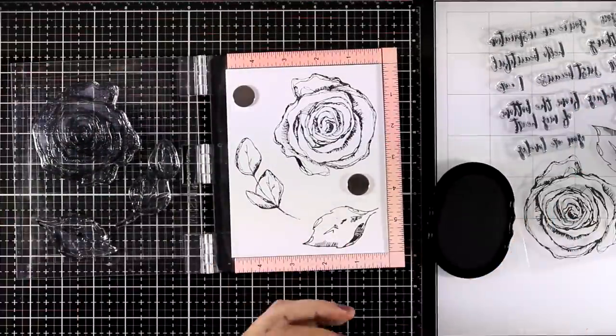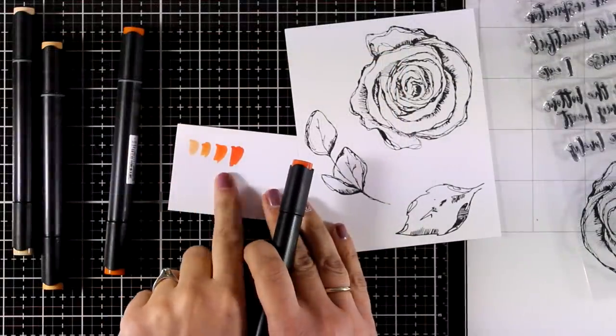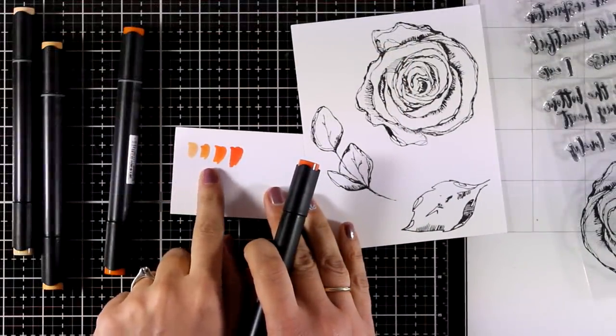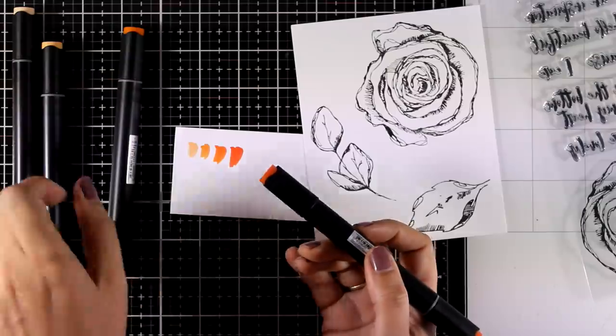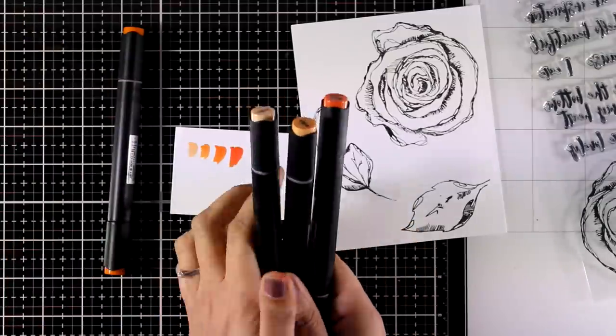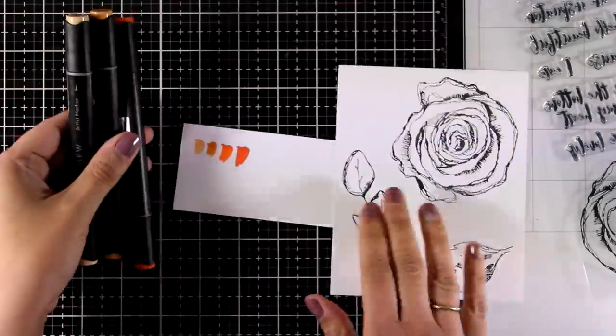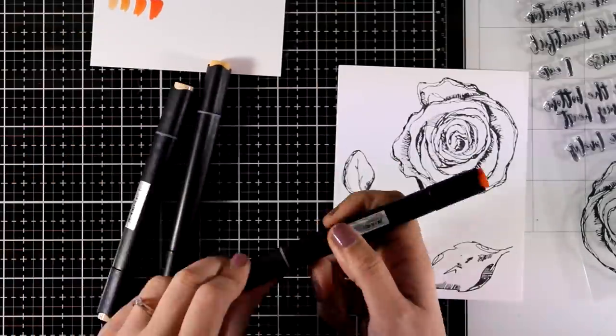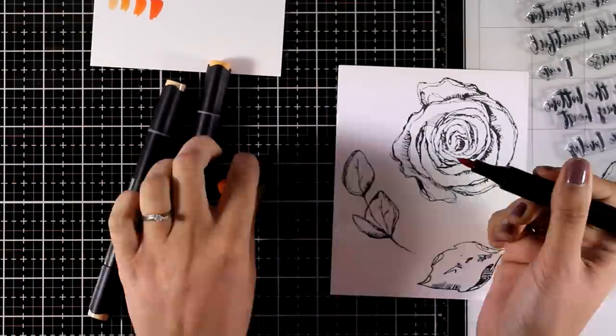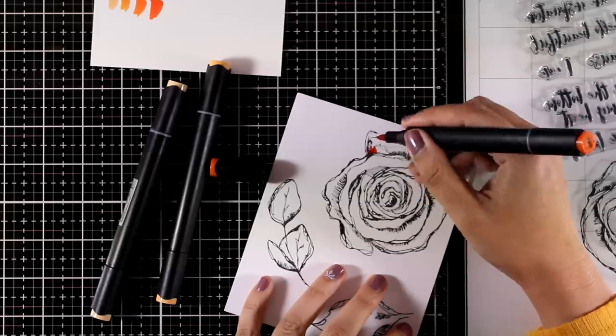To color my flower I will be using the oranges from the new marker set and you can see a quick swatch here. I will be using the two lighter markers and the darker one. Now I will color each and every flower petal separately starting from the darker shade and moving to the middle and to the lighter.